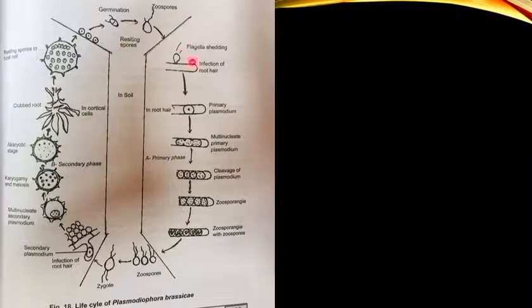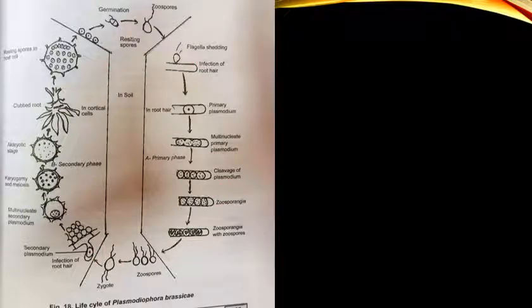This entire life cycle was discovered by M.S. Voronin, a Russian scientist and student of Anton de Bary. Voronin discovered the life cycle of club root of cabbage in 1875–1876 in Russia, at a time when the crop was being devastated by the disease. He identified the pathogen and named it Plasmodiophora brassicae.